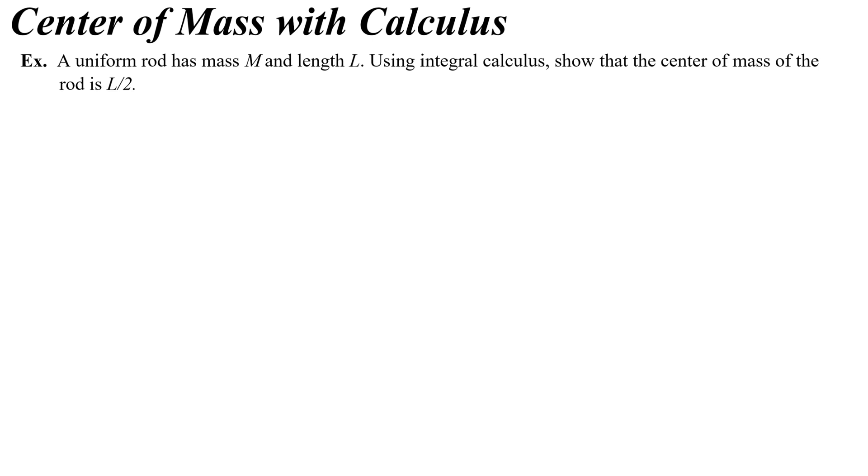Okay, here we go. Center of mass with calculus. A uniform rod has mass m and length l. Using integral calculus, and this is what they will say on the AP test to cue you to do this, show that the center of mass of the rod is l over 2. They will also tell you what the center of mass is so you know what your answer should be.